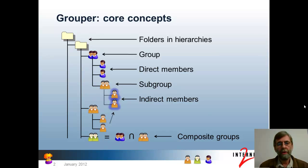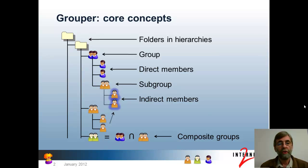Grouper also has a notion of composite groups, or group math, where you can define the membership of one group as the intersection of the memberships of two other groups, or the membership of one group minus another, or as the union of two groups.